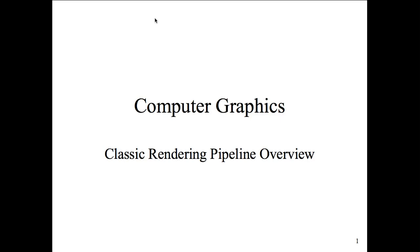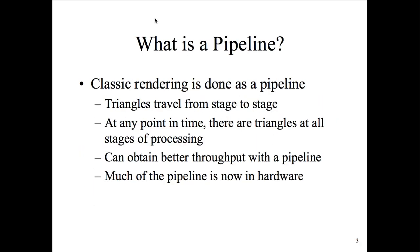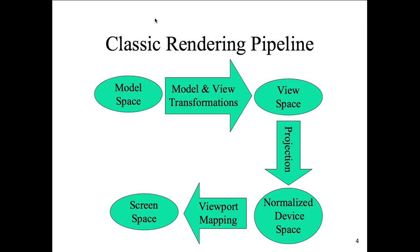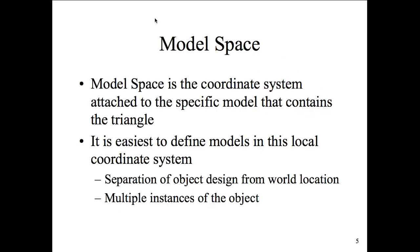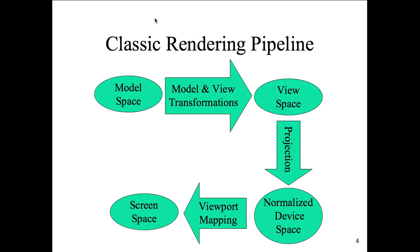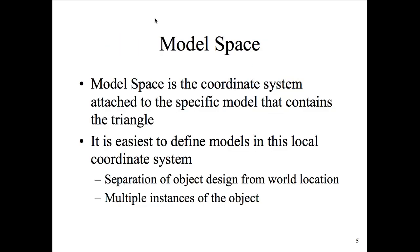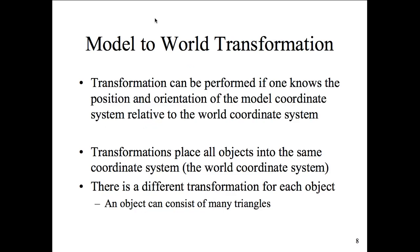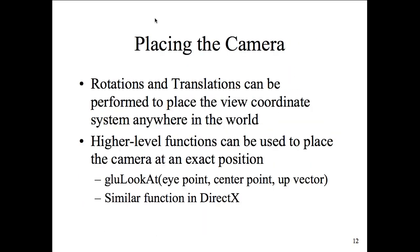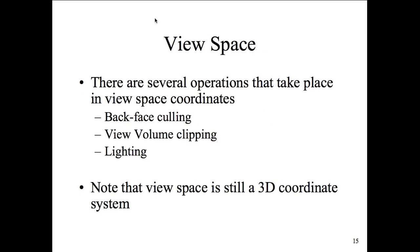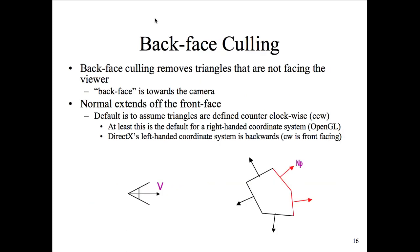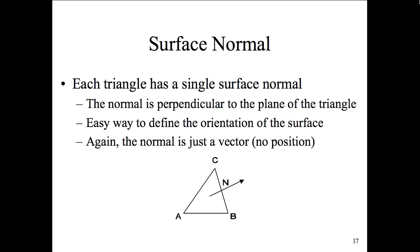We were covering the classical rendering pipeline and an overview of it, talking about the rendering process. I broke it out into several steps: open space, the model-view transformation, view space projection, normalizing the view space, viewport mapping, and then the screen space. The purpose of this lecture was to give you all the terminology, covering model space, world transformations, placing the camera, camera angle, transformation angles, and view space — including the concept of back-face culling to get rid of surfaces we can't see from behind.